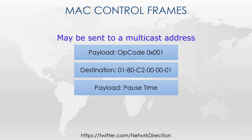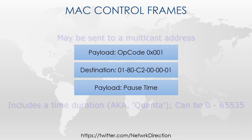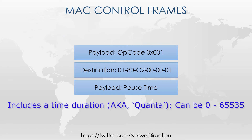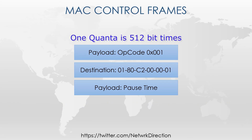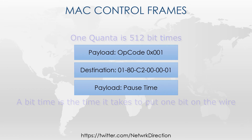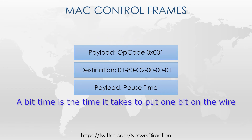Inside the frame is the pause duration, but this isn't measured in seconds or milliseconds. Instead it's measured in a unit called a quanta. A quanta is equal to 512 bit times. A bit time is the time it takes to put one bit on the network medium, so a bit time will vary for different interface speeds.